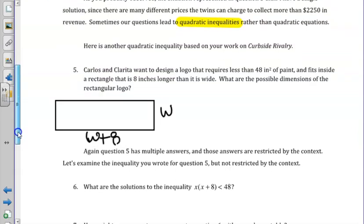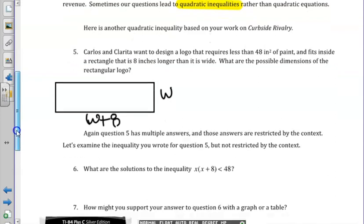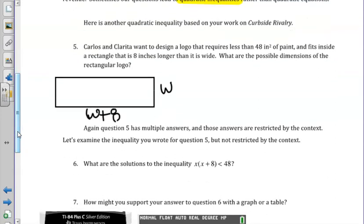So now let's go back to another question that we were posed in Curbside Rivalry. We were given a rectangle and told that now, instead of being equal to 48 inches, we want to design a logo that requires less than 48 inches squared of paint and fits inside this rectangle that is 8 inches longer than it is wide. So we can represent the length as w plus 8 and the width as w.